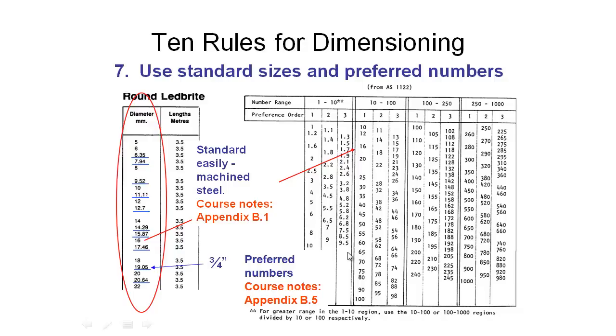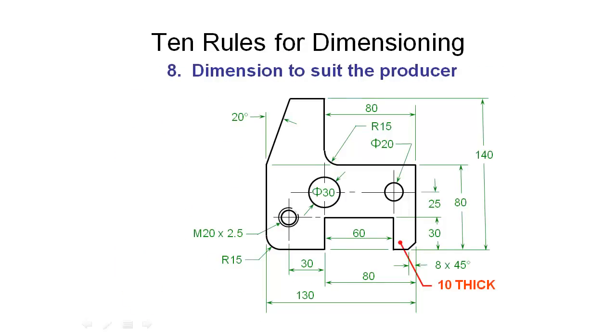Wherever you can, try not to use numbers and measures that are not contained in these tables because it's just going to make life difficult for the people manufacturing your parts. Rule number eight is always have in mind the person producing your part and try and provide dimensions for them that makes it as easy as possible for them to make it with minimal possibility for error.